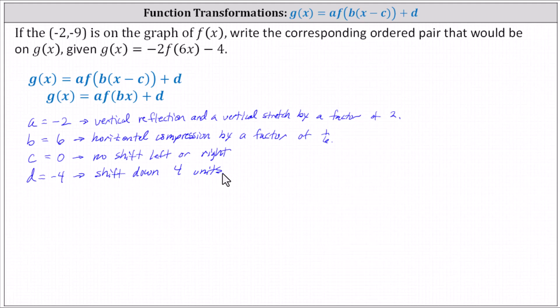Now let's perform the transformations from the inside out to determine the corresponding point on g of x. We'll start with b equals six. We have a horizontal compression by a factor of one-sixth, affecting the x value. We multiply negative two by one-sixth, giving negative one-third comma negative nine.